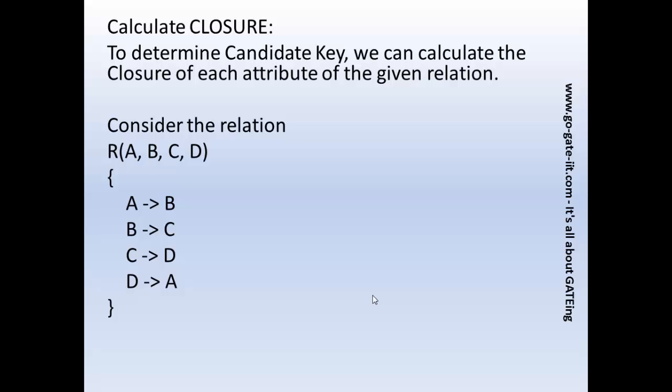The next task is to calculate the closure of an attribute. What do we mean by closure? Closure is a set of all the attributes of the given relation which are derived by the attribute in action. This closure calculation is basically used to determine the candidate key of the given relation — we can calculate the closure of each attribute of the given relation.